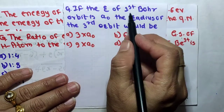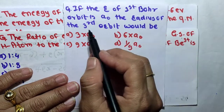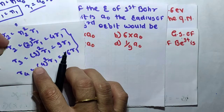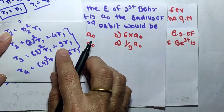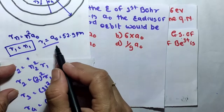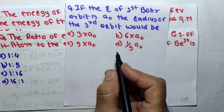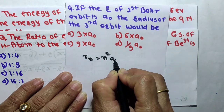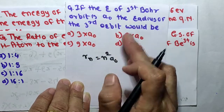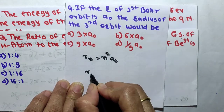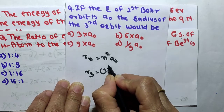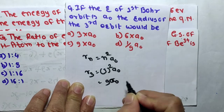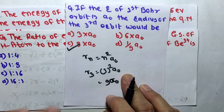MCQ 5: The radius of the first Bohr orbit is a₀. Then the radius of the third orbit is? Using Rn = n² × a₀, we get R3 = 3² × a₀ = 9a₀. Therefore option C is the correct answer: 9a₀.